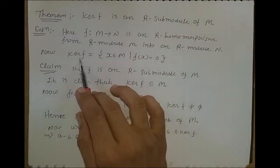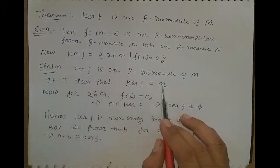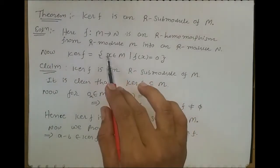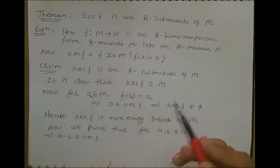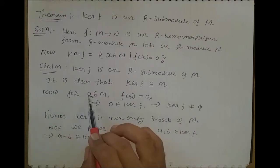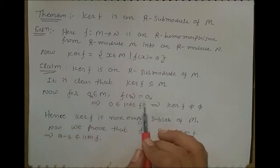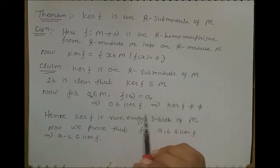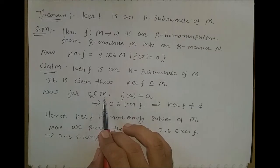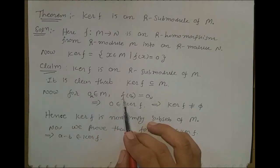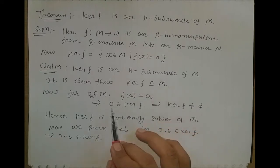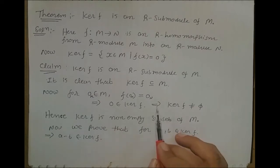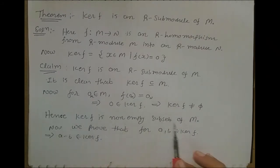Our claim is ker(F) is an R-submodule of M. From the definition of kernel, it is clear that ker(F) is a subset of M because all elements are from M. Now we show that ker(F) is non-empty. Consider 0 belonging to M — this is the zero of R-module M, and the zero on the other side is the zero of R-module N. When we apply R-homomorphism F on 0, we get 0. So 0 belongs to ker(F), which means ker(F) is non-empty. Hence, ker(F) is a non-empty subset of M.